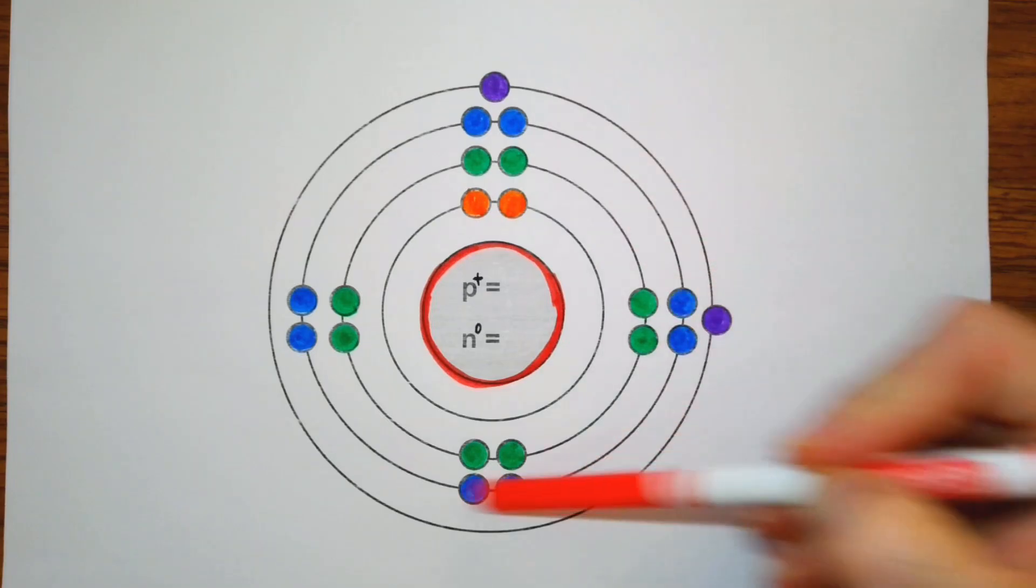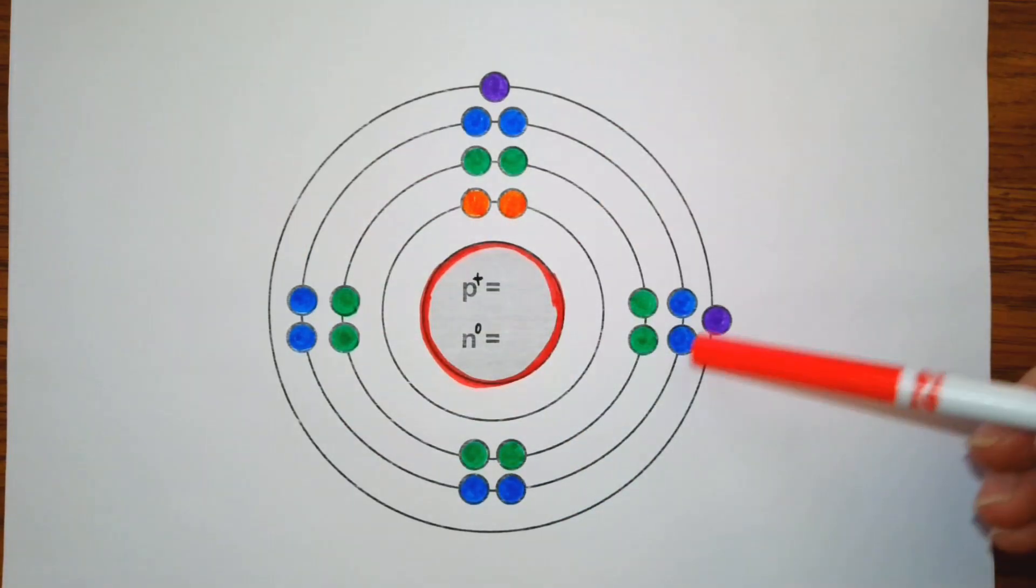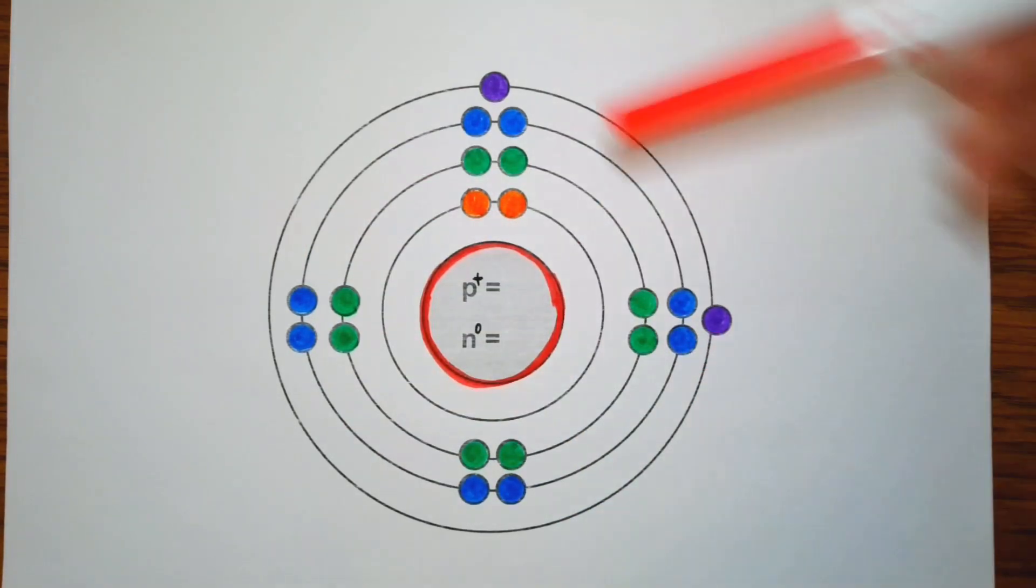Our third orbital can hold up to eight electrons, and I have this in blue. And the fourth orbital, it will work up to two electrons.